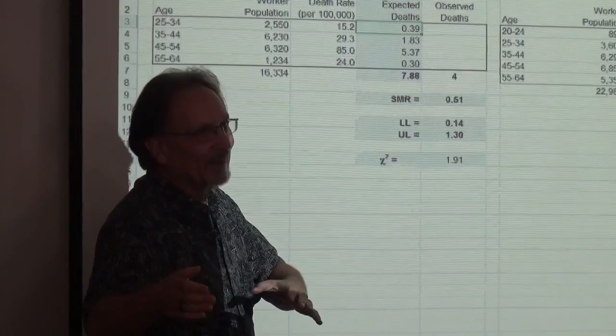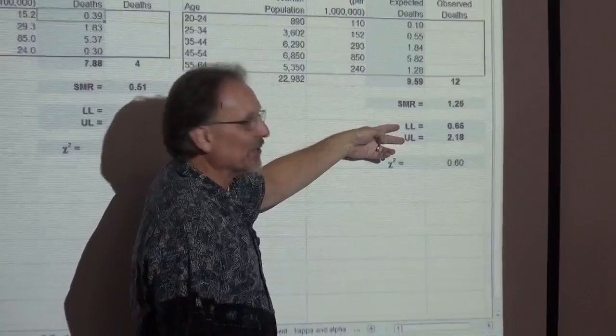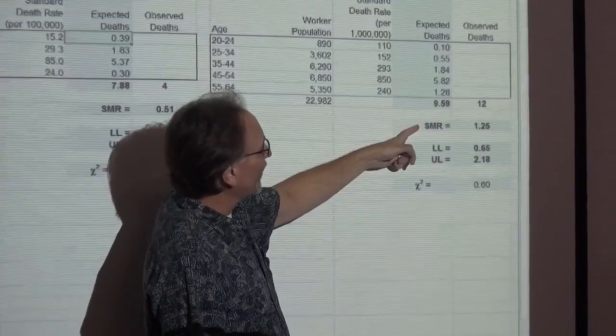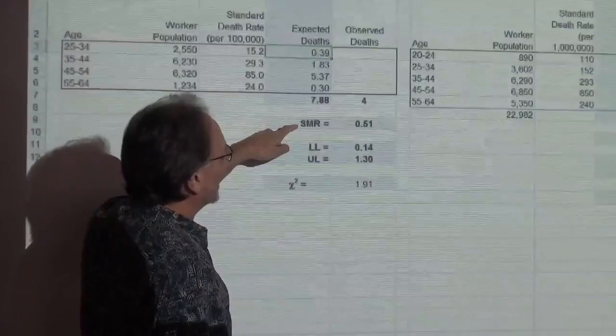For the second one, the SMR is greater than one, but between the lower limit and upper limit we still have one in there. So despite appearances — the first looks more healthy but is not statistically significant; the second looks less healthy but is still not significant. You still have to double check that raw SMR with the lower and upper limits, because the raw SMR alone doesn't tell you enough. The confidence interval limits do.